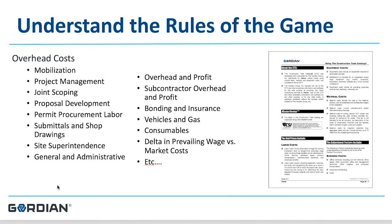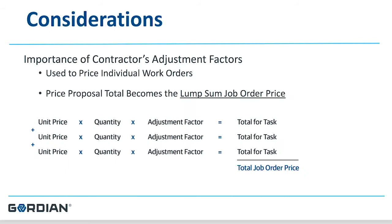Think about all the general condition expense it takes to manage a project — that expense needs to be in your adjustment factor. The importance of your adjustment factor is that it is used to price individual work orders; the price proposal total becomes the lump sum job order price. The price book formula is: unit price × quantity × adjustment factor = total for each task. All tasks are added together to give you the total job order price.